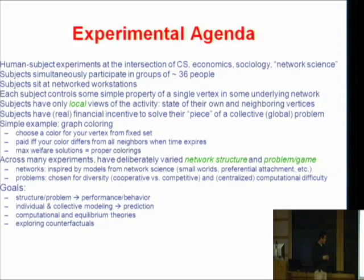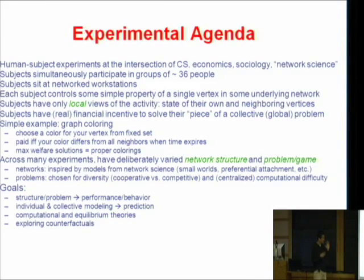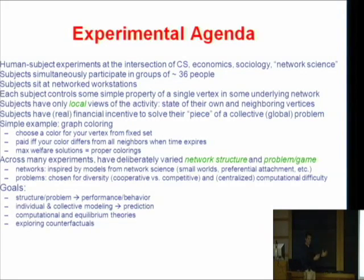In graph coloring, you just choose a color for your vertex and you're paid if and only if your color differs from your neighbors when time expires. You only have a local view — you can see your color and the colors of your surrounding neighbors. We follow fairly rigorous methodology here, putting up physical partitions in the room full of workstations so it's very difficult to see anything but your own terminal. And even if you could see other terminals, there's no relationship between physical proximity in the room and your position in the network.